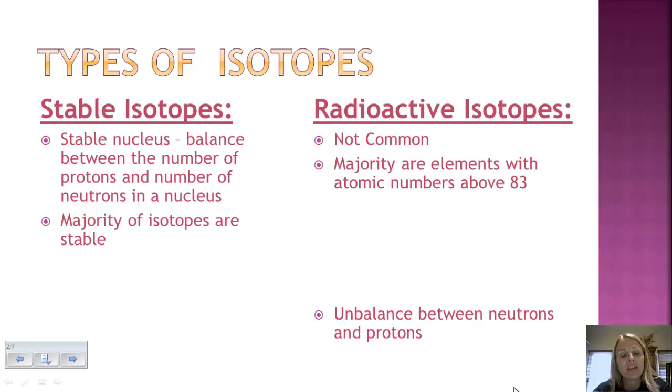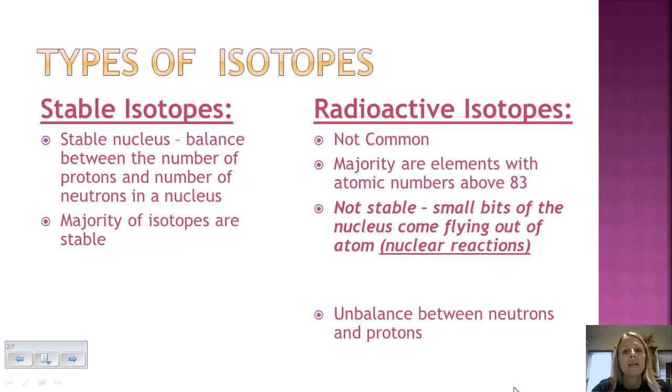Then there's radioactive isotopes, and these occur in the elements majority over atomic number 83 or above. And there's an unbalance. This is why they are considered radioactive. There's an unbalance between the number of neutrons and protons making them unstable. So bits of the nucleus come flying out, and this leads us to our nuclear reactions.